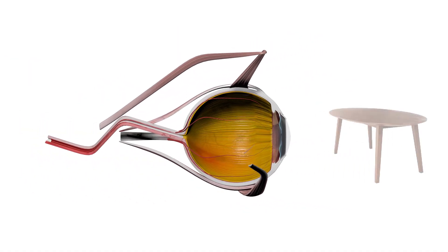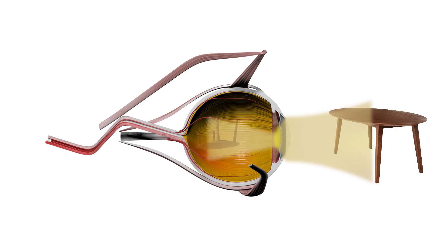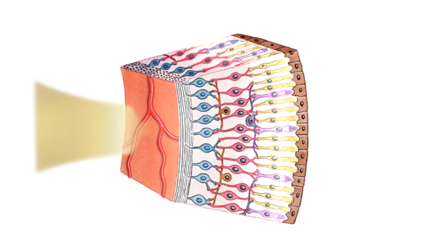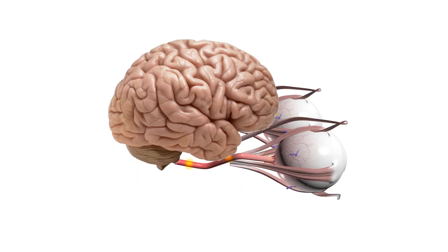When a person looks at an object, light rays are reflected from that object to the eye. As the rays pass through the optical system of the globe, or eyeball, they are bent to produce an upside-down image of the object at the back of the inner eyeball. In the retina, the image is converted to electric impulses that are carried to the brain, where the image is translated so the object is perceived in its upright position. The light-sensitive cells of the retina convert the image to electric impulses carried to the brain by the optic nerve, which are integrated in the brain's visual cortex to produce the sensation of light.